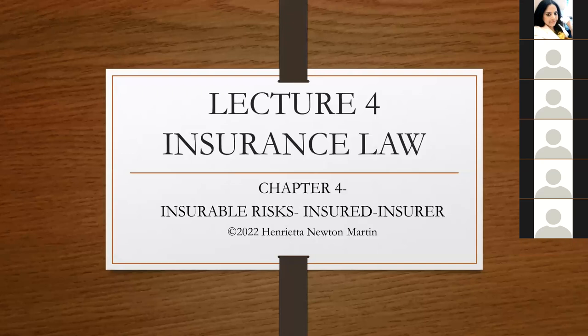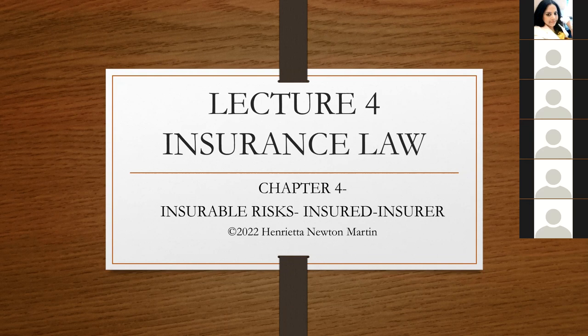What we are trying to see in insurable risk is that the risk you are trying to cover has to be quantified — to the extent that you should be able to measure the loss in case there is damage to the thing you're trying to cover. The insurable risk should be capable of being quantified or measured. This is one of the important elements of insurable risk: it is a risk that can be covered and can be quantified or calculated.